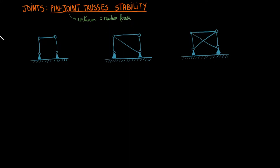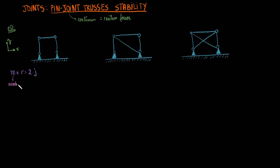Notice that these three systems are all in 2D, so we have three balance equations to work with. We need three unknowns to have a statically determinate system. There is an equation we can use to check if the trusses are statically determinate: m plus r equals 2 times j, where m is the number of members, r is the number of reactions, and j is the number of joints.